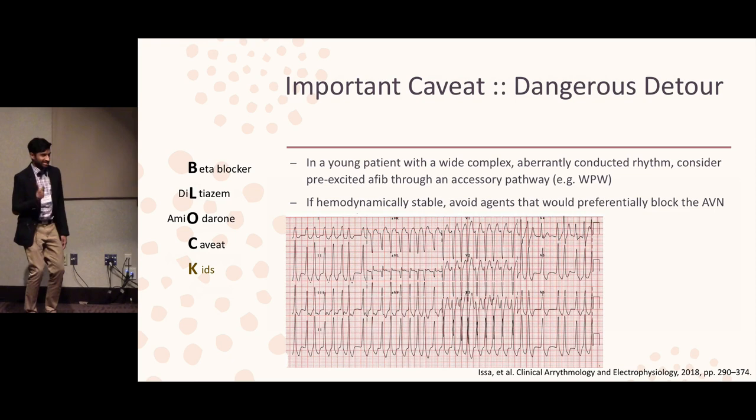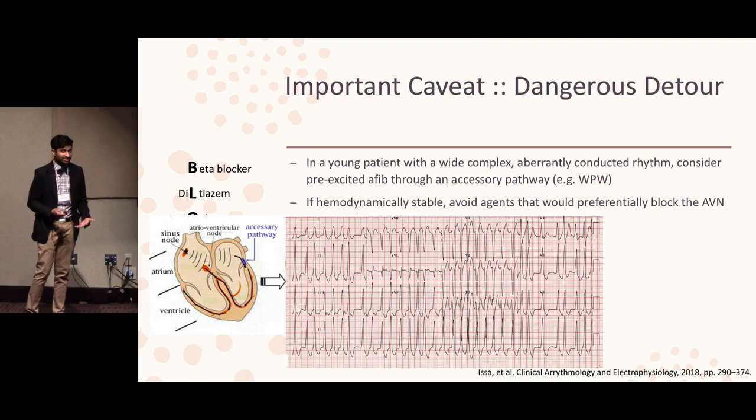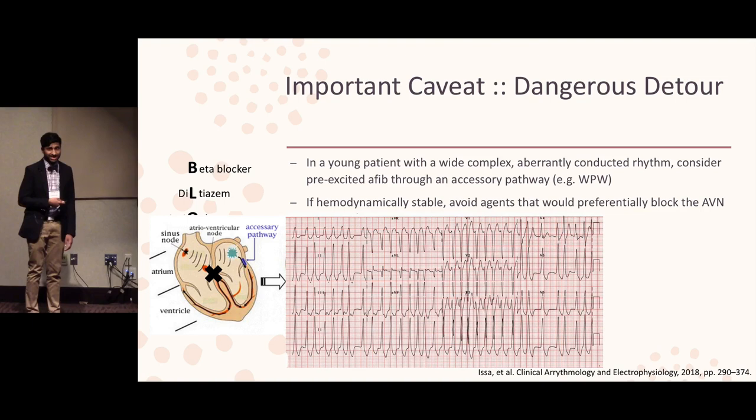Last but not least, just in case you see it before we do: when you have a young patient coming in with AFib with RVR and a wide complex tachyarrhythmia, you have to be concerned for an accessory pathway or WPW. This changes management a lot, because if you try to block off that AV node, any atrial signal won't go down the AV node — it'll go down the accessory pathway. And when that gets conducted one-to-one, you get VFib. Which is why, again, call us.